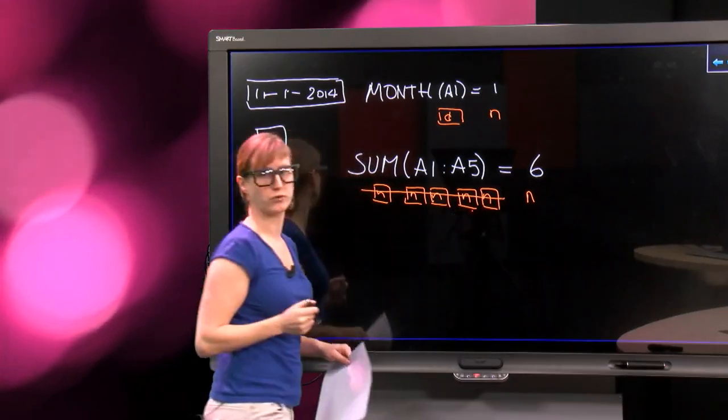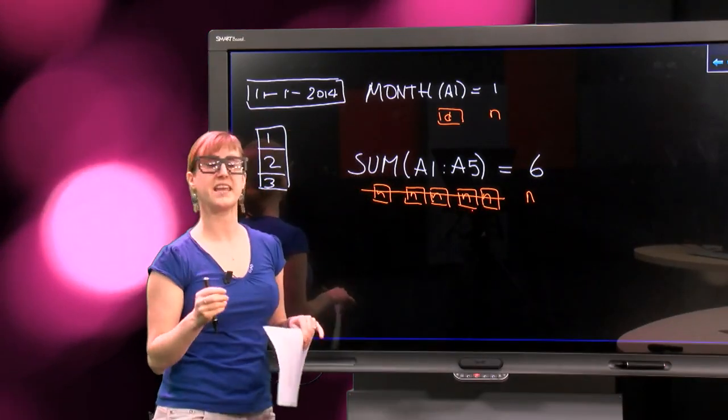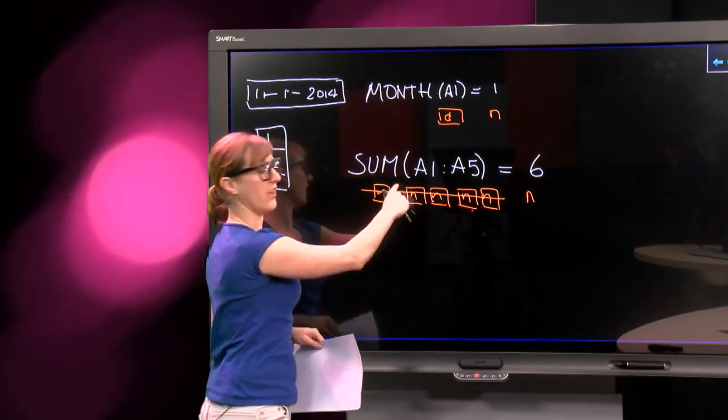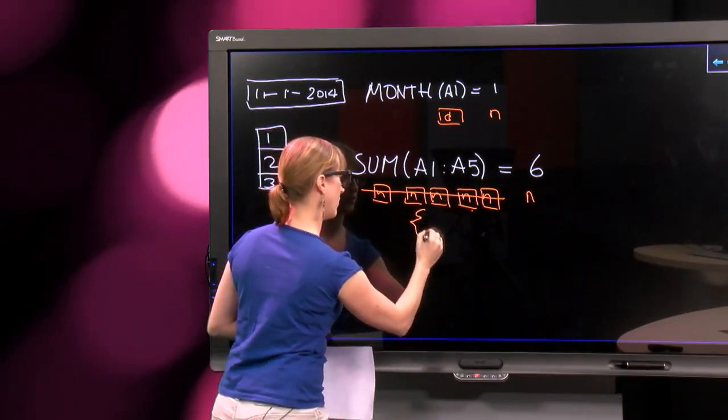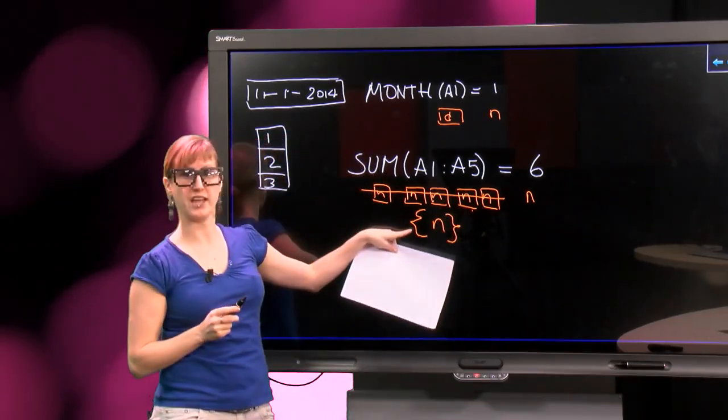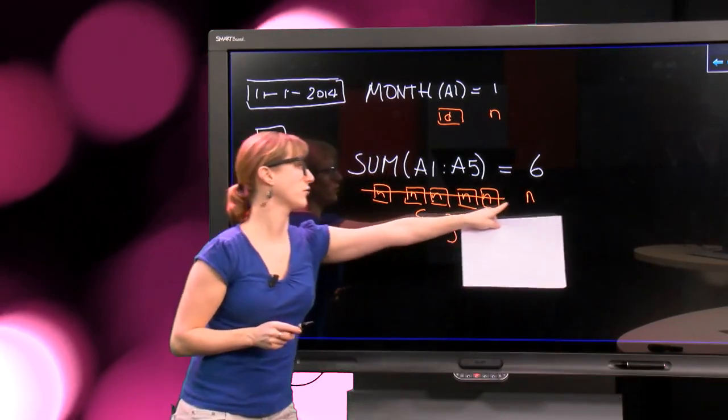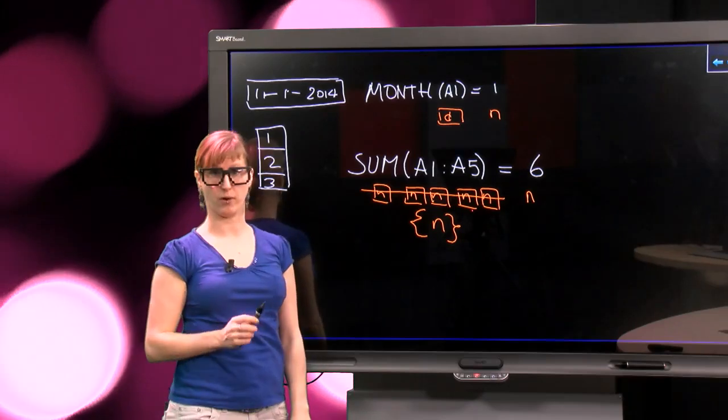What we are saying here is, we are summing over a list of numbers. So the type, as I will write that down in subsequent videos, is a list of numbers, and the result of the function is a number.